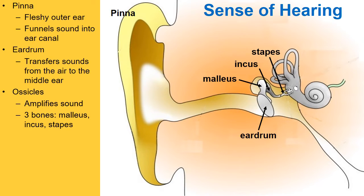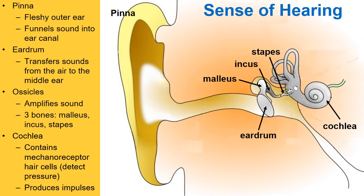The ossicles help to amplify sound in the process of us hearing. The next part of our anatomy is this curly, almost seashell-shaped bone inside of the inner ear called the cochlea. Inside of the cochlea, there are mechanoreceptors that we call hair cells.